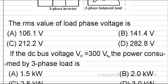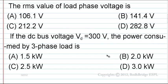Second question: If the DC bus voltage Vd equals 300 volts, the power consumed by three-phase load is: (A) 1.5 kilowatt, (B) 2.0 kilowatt, (C) 2.5 kilowatt, (D) 3 kilowatt.